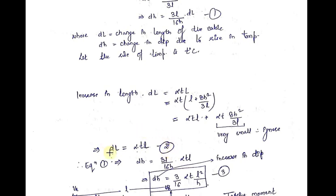After putting the value of dL from equation number 2 into equation number 1, I will get the value of small dh equal to (3l / 16h) into alpha·T·l. After rearranging and simplifying, we get dh equal to (3 / 16h) into alpha·T·l² / h. This is the equation for the increase in dip.